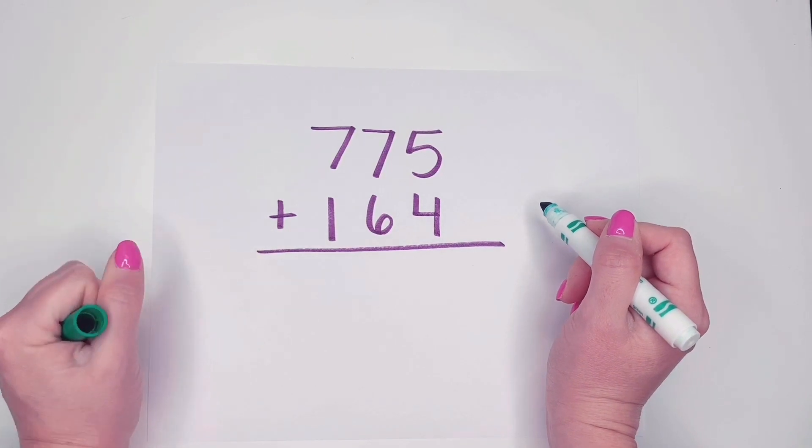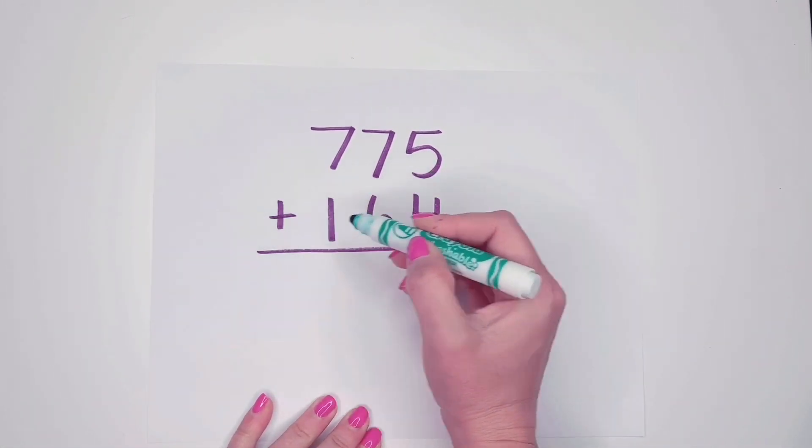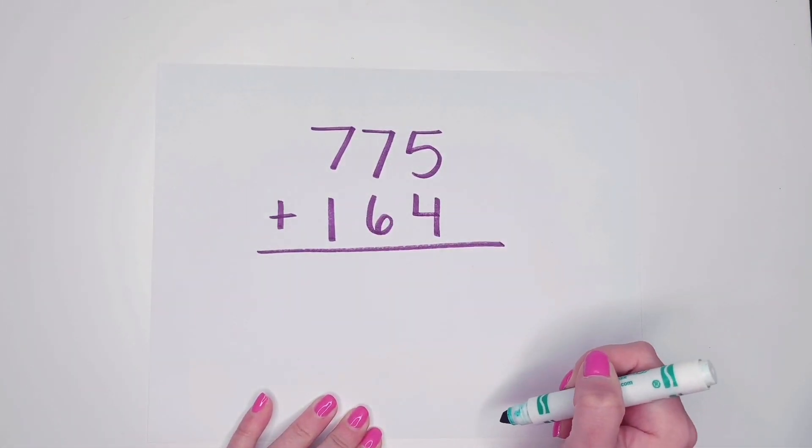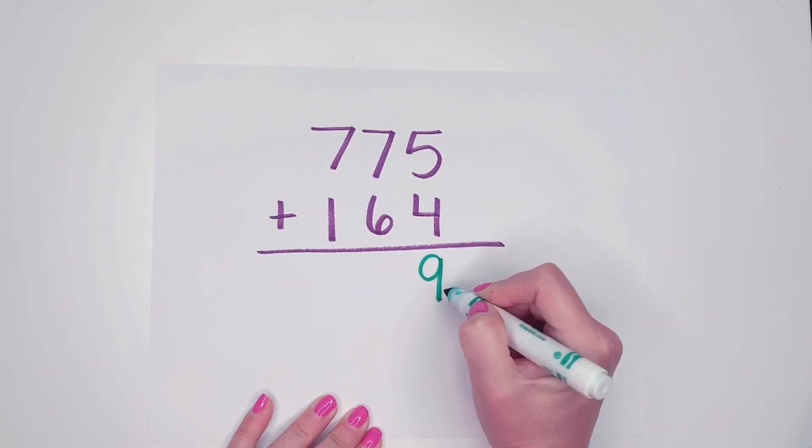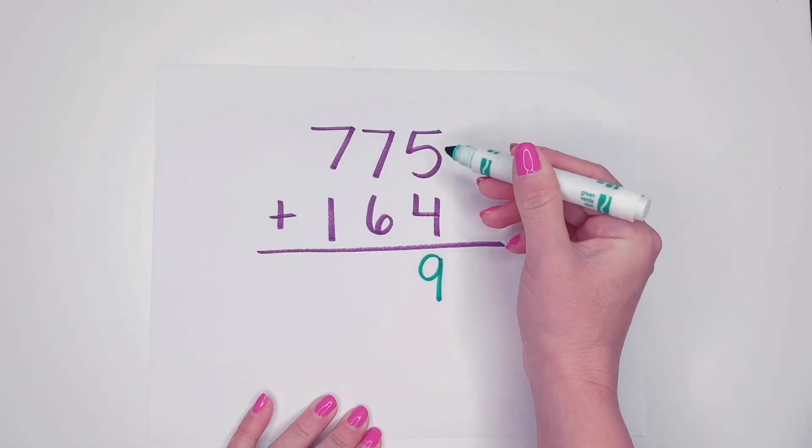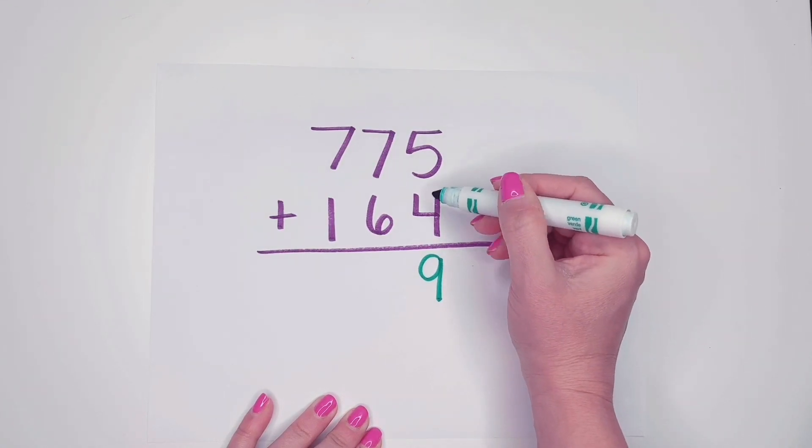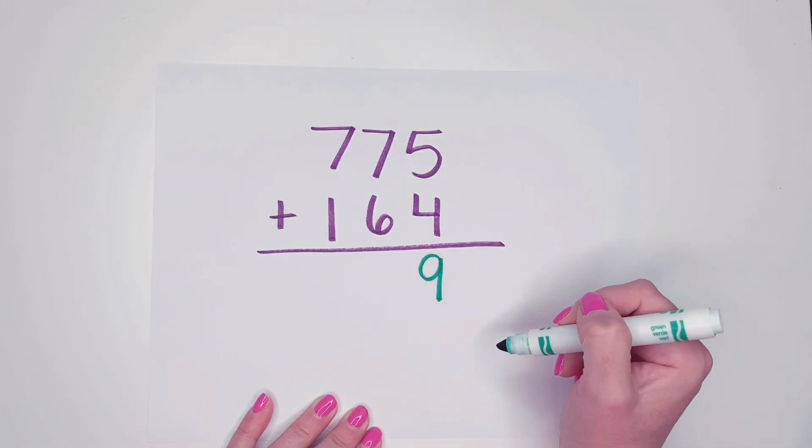Okay, let's go over the problem together. We have five plus four. I'm going to start with my ones column. Five plus four is nine. Because I know four plus four is eight and five plus five is ten. So five plus four must be nine.